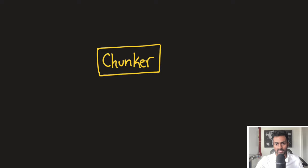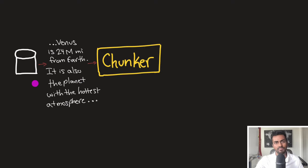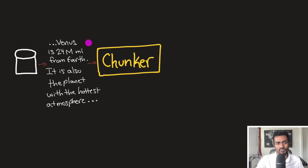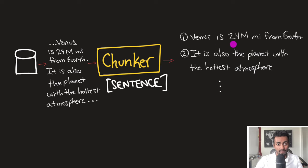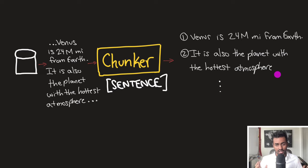We have a component called a chunker. The source of this data is going to be some database — or a multitude of databases — containing raw text data. For example, somewhere in the middle of a stream of text you might have: 'Venus is 24 million miles from Earth; it is also the planet with the hottest atmosphere.' The role of the chunker is to take this data and break it into chunks. These chunks can be broken down in many ways — in the first case, we're breaking it down by sentences.